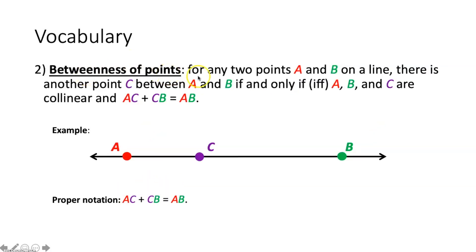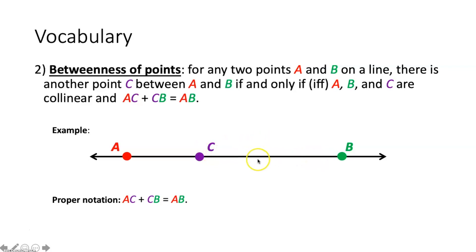Now, betweenness of points: for any two points A and B on a line, there is another point C between A and B if and only if A, B, and C are collinear and AC plus CB equals AB. This is a mouthful but it's actually pretty simple. It's saying that if you have two points, A and B, on a line, point C is between A and B if C is also on that same line — all three are collinear — and the measure of segment AC plus the measure of segment CB equals the measure of segment AB. Basically, the sum of the two parts equals the whole.